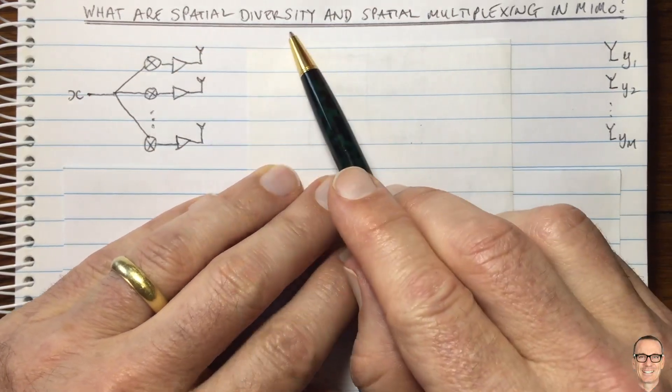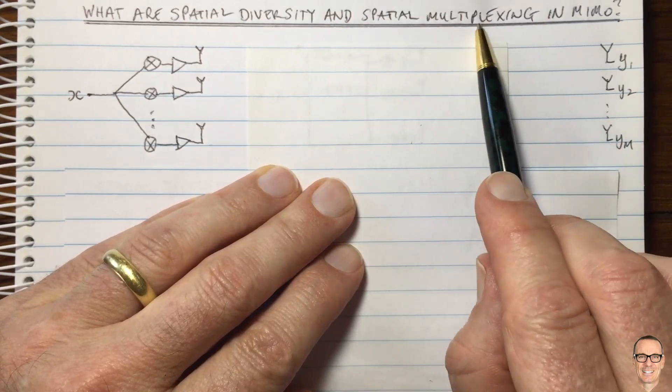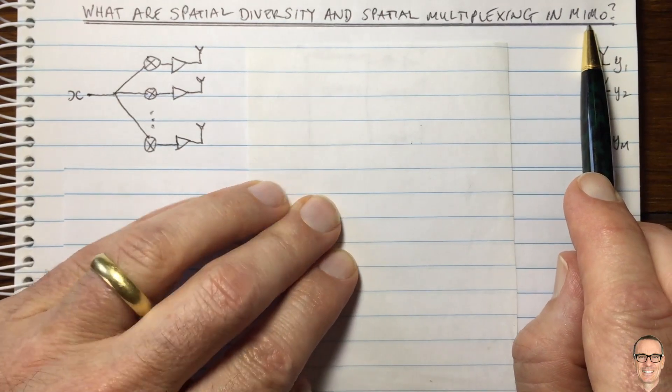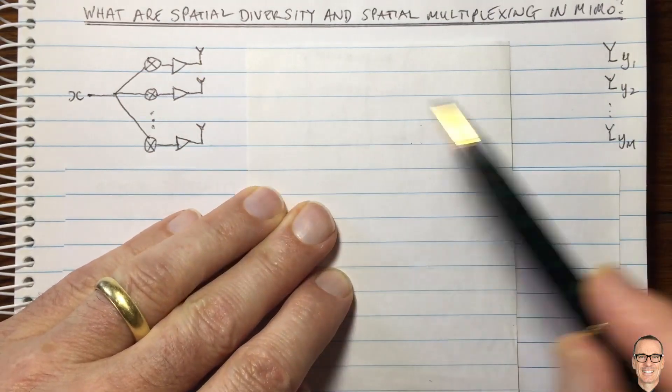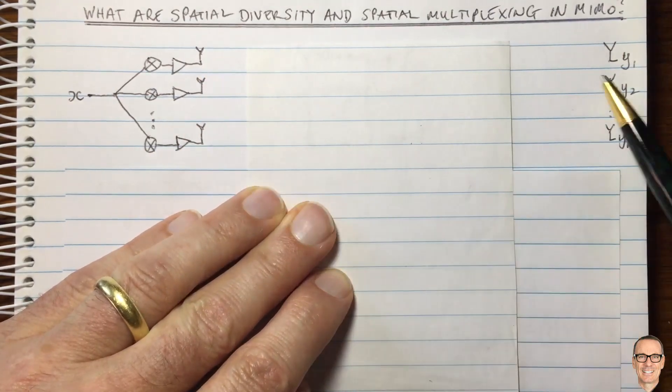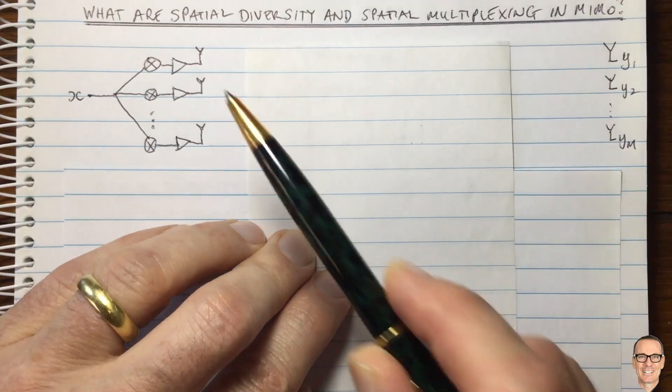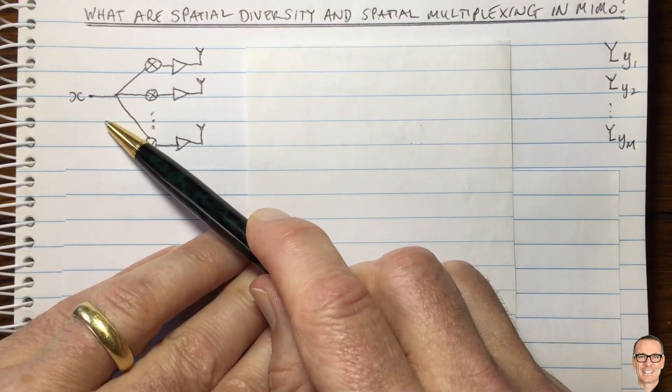So what are spatial diversity and spatial multiplexing in MIMO digital communication systems? Here we have a MIMO system with M antennas at the transmitter and M antennas at the receiver. And here's one way of sending data.